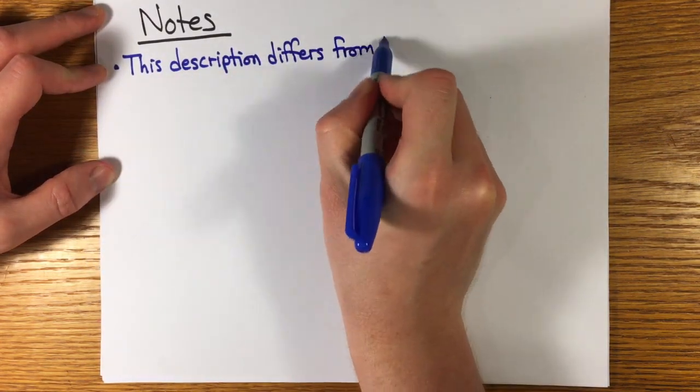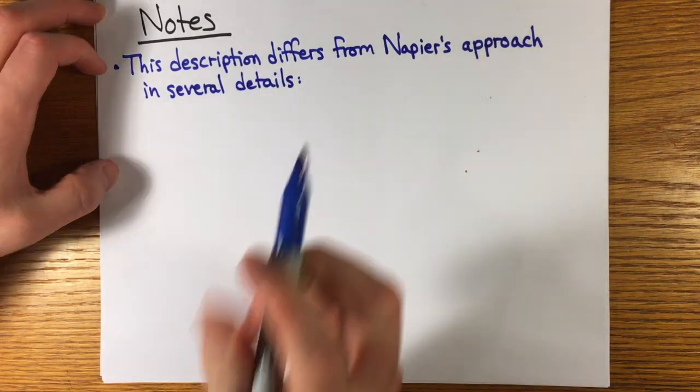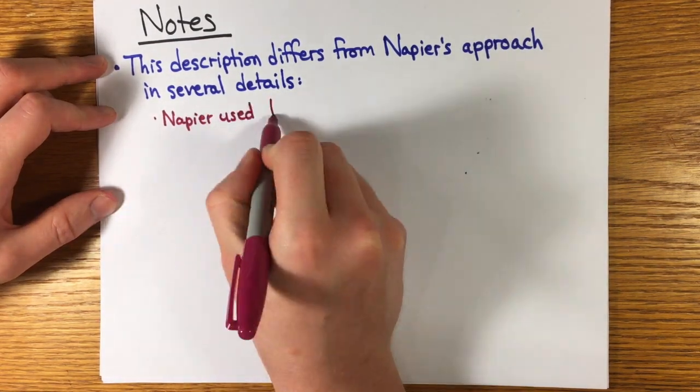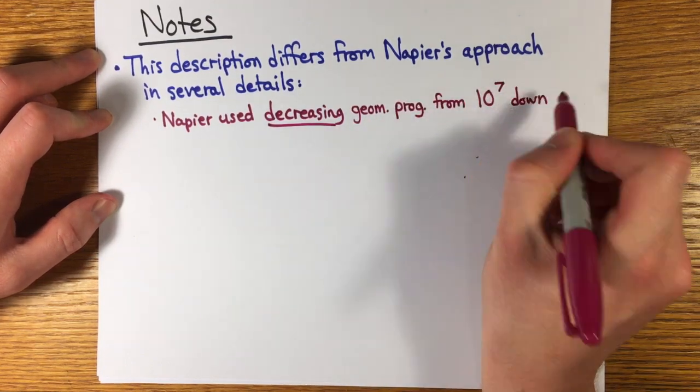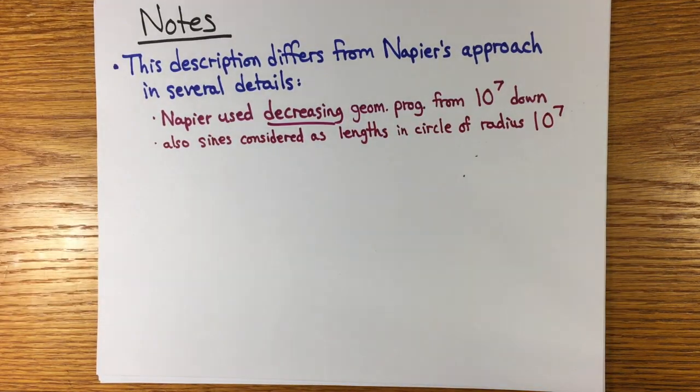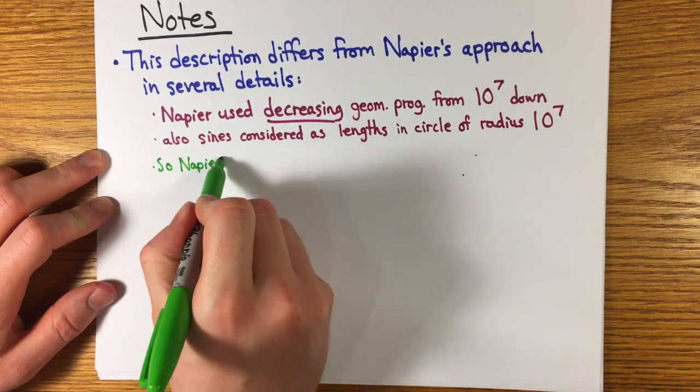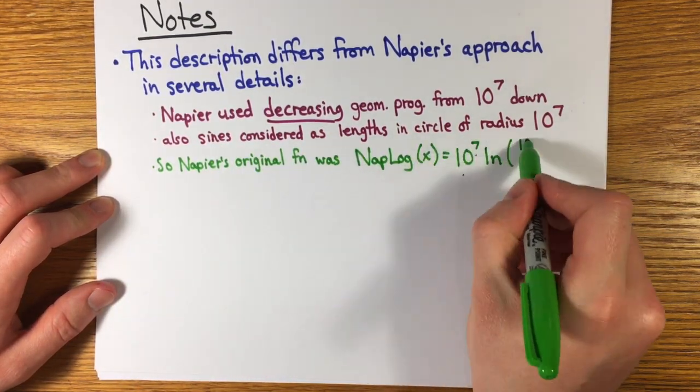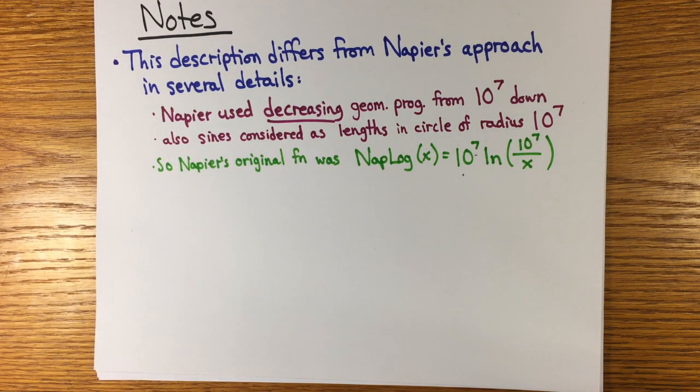Here I've tried to capture the spirit of what Napier was trying to do, but the details of his particular construction were different in several ways. He used a decreasing geometric progression rather than an increasing one. He took 10 to the 7th to be the radius of the circle and considered the sines as lengths working downwards with a logarithm set to 0 at 10 to the 7th. So in terms of our modern natural logarithm, Napier's function was Napier log of x equals 10 to the 7th log of 10 to the 7th over x. Also his analysis was based on the differential equation of exponential decay for the values as the indices progressed arithmetically, just like Newton's discussion of drag force. I'll include references in the description if you want a fuller picture of Napier's actual process. Here, by the way, is a page from his table.